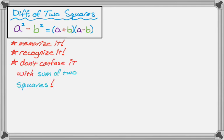You definitely want to not confuse it with the sum of two squares. A sum of two squares looks like this. It's a squared plus b squared. That's not going to factor for us because we're talking about over the real numbers. So let's do a bunch of examples and see how to use it.